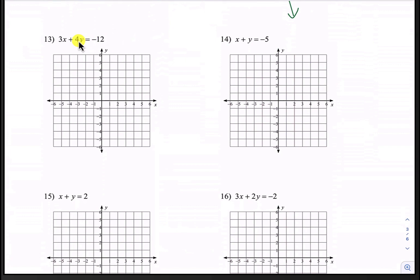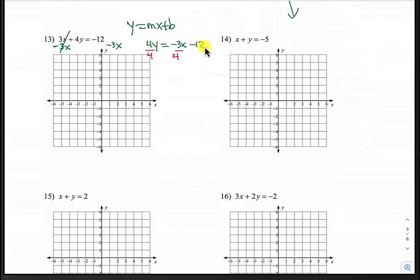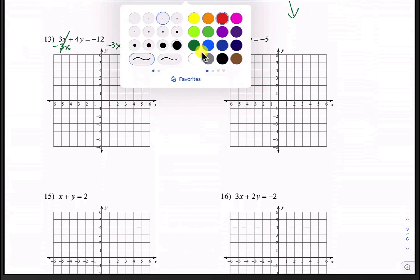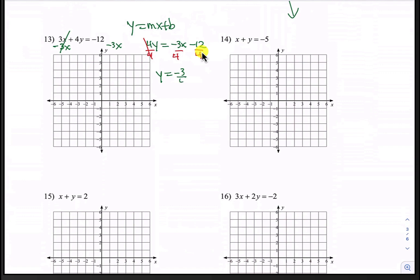Here's number 13. We want to get it in the y equals mx plus b form. The first thing is to subtract 3x from both sides. Those 3x's cancel, leaving us with 4y equals negative 3x minus 12. We'll then need to divide by 4 everywhere. Those 4's cancel and now we have y equals negative 3 fourths times x minus 3, because 12 divided by 4 is 3.